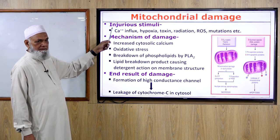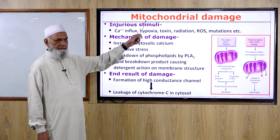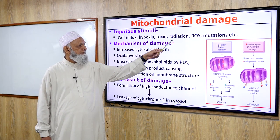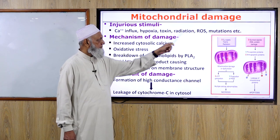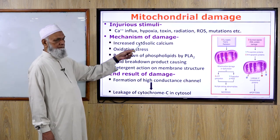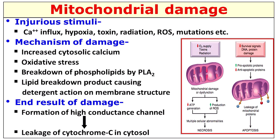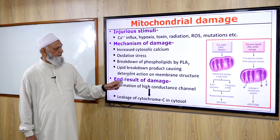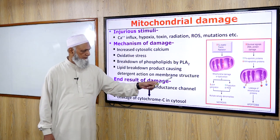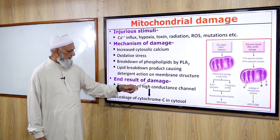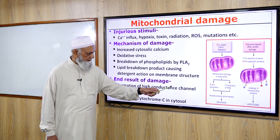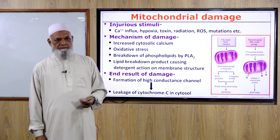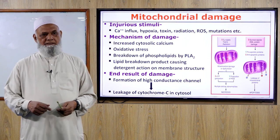Injurious stimuli for mitochondrial damage include calcium influx, hypoxia, toxins, radiation, reactive oxygen species, and mutations. Mechanism of damage involves increased cytosolic calcium, oxidative stress, and breakdown of phospholipids by phospholipase A2; lipid breakdown products exert a detergent action on membrane structure. The end result is formation of high-conductance mitochondrial channels and leakage of cytochrome C into the cytosol, which is involved in the intrinsic pathway of apoptosis.